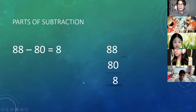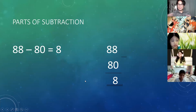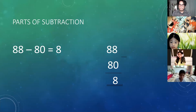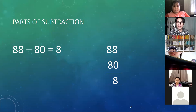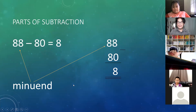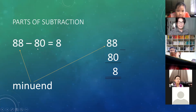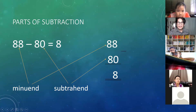Anyone who can remember their grade 3 mathematics? 88 starts with the letter M. What do you call 88? It's minuend — everybody say minuend. Okay, that's the biggest number in the equation. And what do you call number 80? It starts with the letter S. It's subtrahend — everybody say subtrahend.